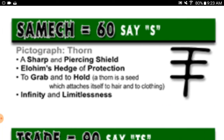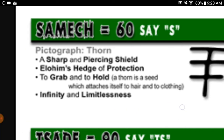Samech equals sixty, say 'S.' Pictograph: thorn — a sharp and piercing shield. Elohim's hedge of protection, the Almighty One's hedge of protection. To grab and to hold. A thorn is a seed which attaches itself to hair and to clothing. Infinity and limitlessness.